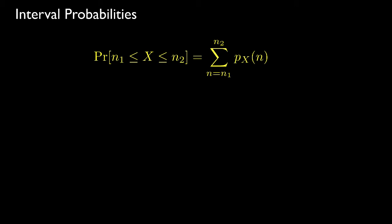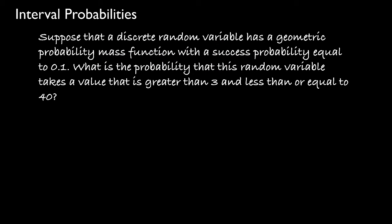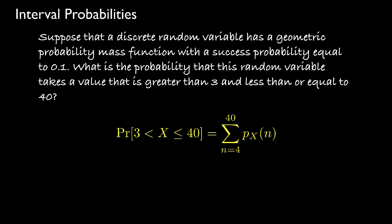If we want to know the probability that a random variable is greater than or equal to n1 and less than or equal to n2, we sum the values of the probability mass function over that interval. As an example, let's determine the probability that a geometric random variable is greater than 3 and less than or equal to 40, when the success probability is equal to 0.1. We need to sum the PMF from 4 to 40, since 4 is the first integer greater than 3.